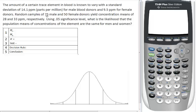Random samples of 75 male and 50 female donors yield concentration means of 28 and 33 parts per million, respectively. Using a .05 significance level, what is the likelihood that the population means of concentrations are the same for men and women? Notice we're dealing with two samples here, so let's make a list of those samples and see what we're dealing with.